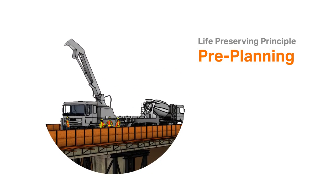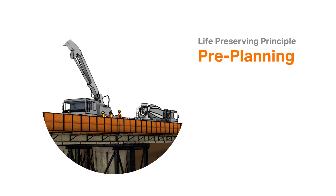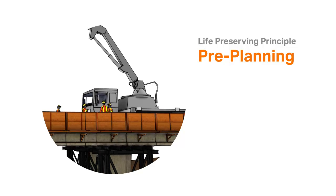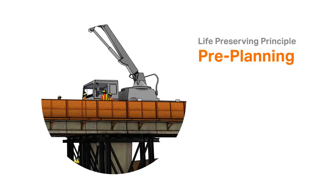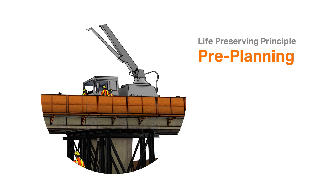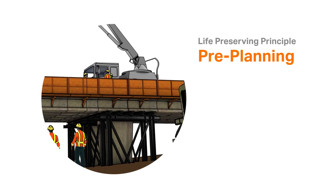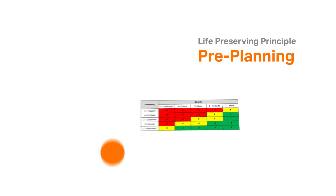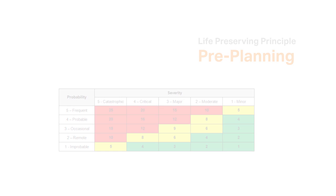As part of our Pre-Planning Life-Preserving Principle, we identify the likely hazards associated with work and plan for controls to manage hazards. In this case, the work planning should have taken into account the hazards to workers below the area where concrete pouring was occurring. The area should have been marked off to exclude workers from the hazard. An important tool to facilitate this is the Task Hazard Assessment.